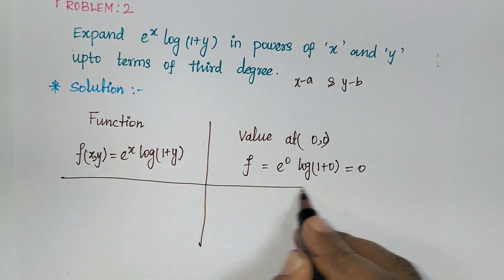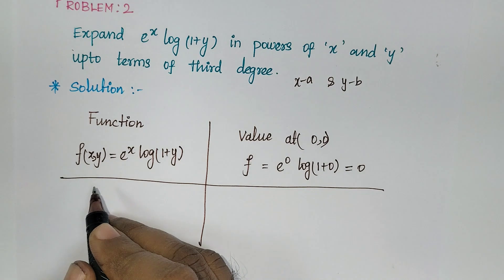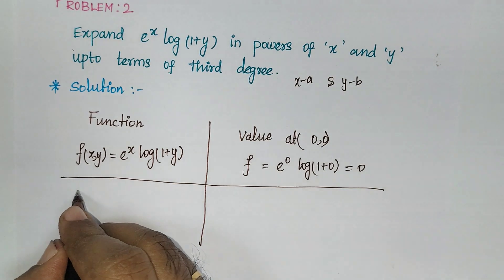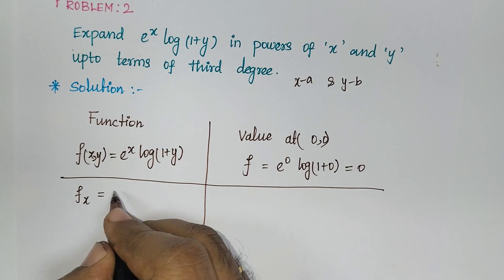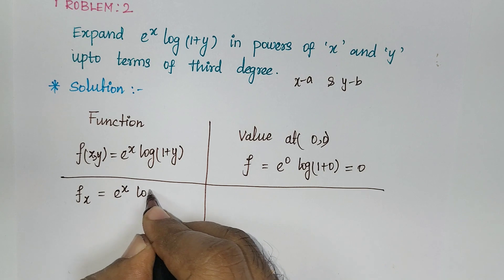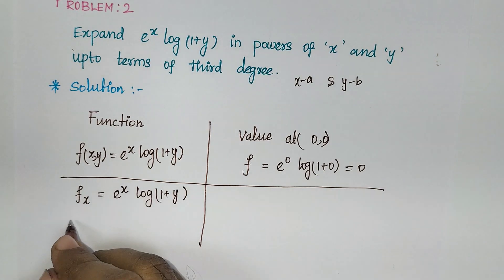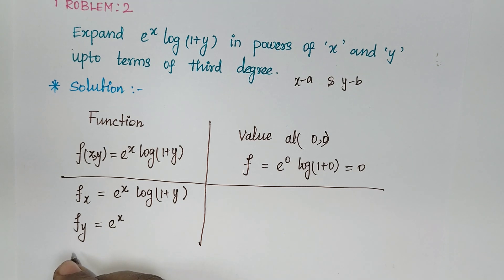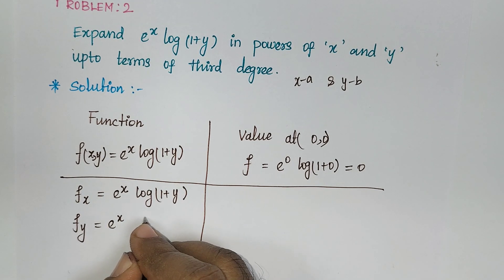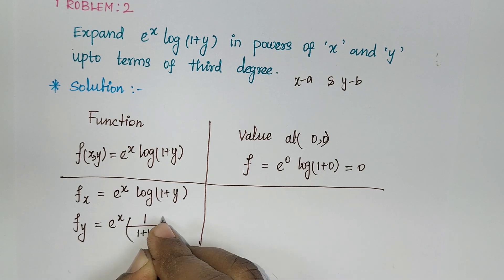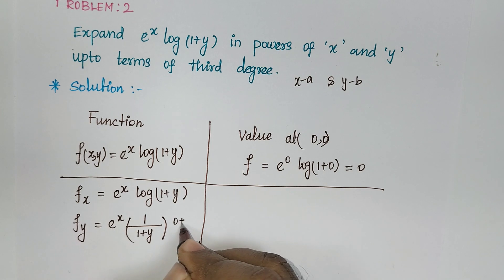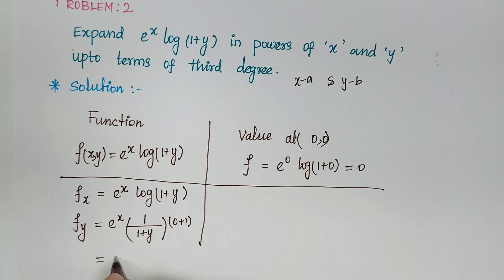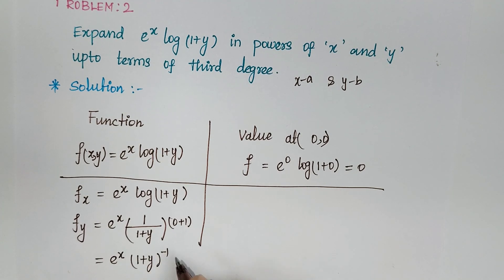Next, we have to partially differentiate the function with respect to x and y — that gives us the first degree terms. Partially differentiating with respect to x: the derivative of e^x is e^x, and log(1 + y) is constant, so fx = e^x * log(1 + y). Partially differentiating with respect to y: e^x is constant, and the derivative of log(1 + y) is 1/(1 + y), so fy = e^x * (1 + y)^(−1).